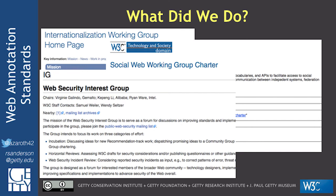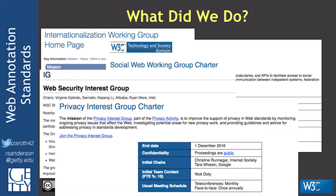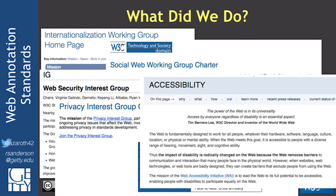On security: since the implementation is the annotating of the web, we worked with the security group to ensure our specifications were not opening holes that could allow access to protected content. On privacy, the distinction between pseudonymity, anonymity, and full identity is important — what are you giving up by annotating, and what can you expect? On accessibility, as Tim Berners-Lee says, the power of the web is in its universality. How are annotations accessible, both in creating them and consuming them?